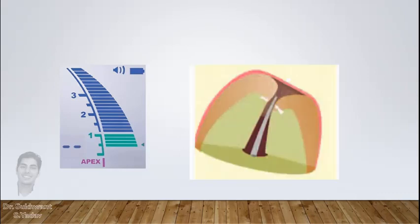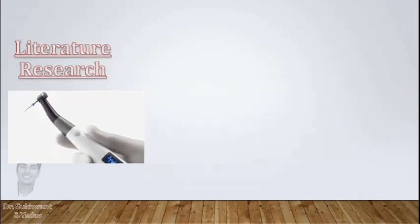So it's better to reduce 0.5mm as a safety factor. Coming to tri-auto Root ZX, which is an endomotor with inbuilt apex locator. Many clinicians feel that this is the best way of canal preparation, as whenever the rotary file reaches apical constriction, the apex locator will indicate and the file will auto-reverse.